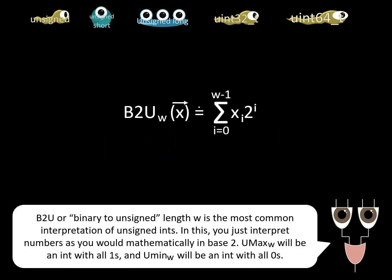B2U, or binary to unsigned length w, is the most common interpretation of unsigned ints. In this, you just interpret numbers as you would mathematically in base 2. U_max_w will be an int with all 1s, and U_min_w will be an int with all 0s.